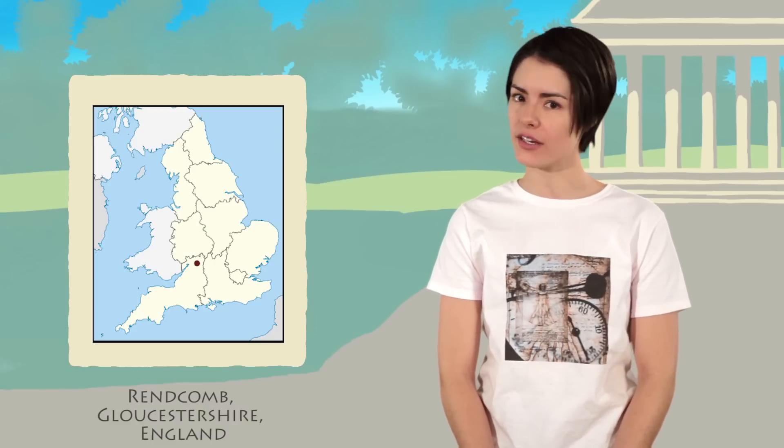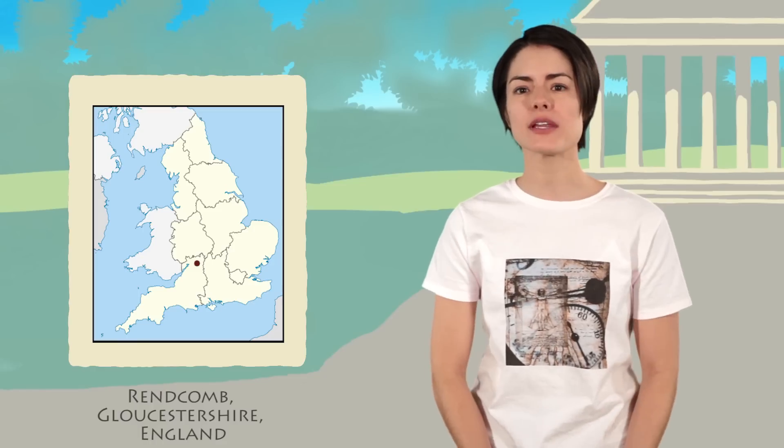Frederick Sanger was born to a well-to-do family on August 13th, 1918 in the small village of Redcombe, England. He and his siblings were raised as Quakers. Sanger's early education was provided at home by a governess, then from the age of nine he attended independent schools.